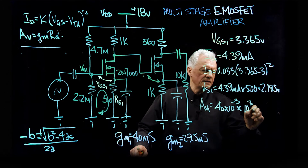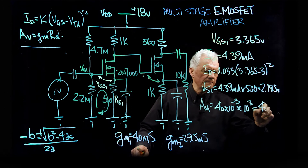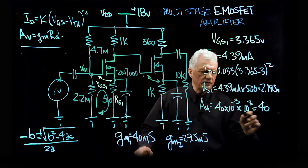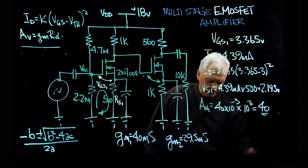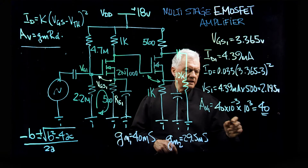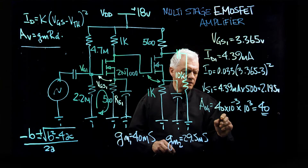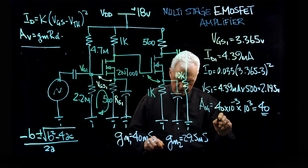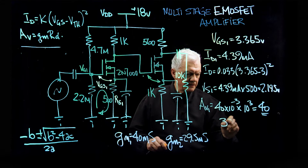So the gain is going to be 40. If you take the log of that and multiply by 20, it's going to equal 32 dB.